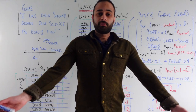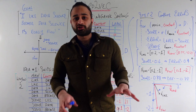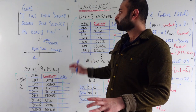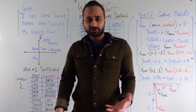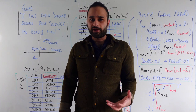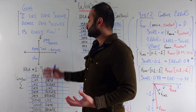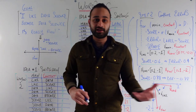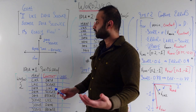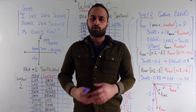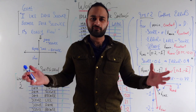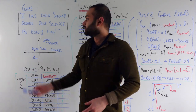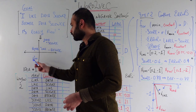Hey everyone, welcome back. Today we're going to be talking about a cool concept in natural language processing called Word2Vec. As the name would suggest, Word2Vec is a method that's going to allow us to take a sentence like this one — 'I like data science because data science is really fun' — or a longer paragraph, and convert every single word inside the sentence into a vector.